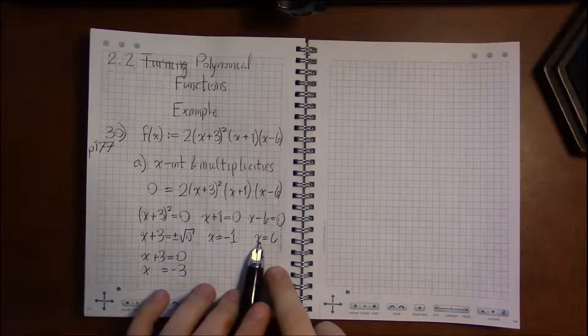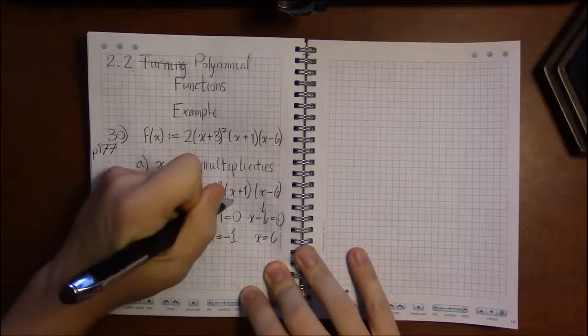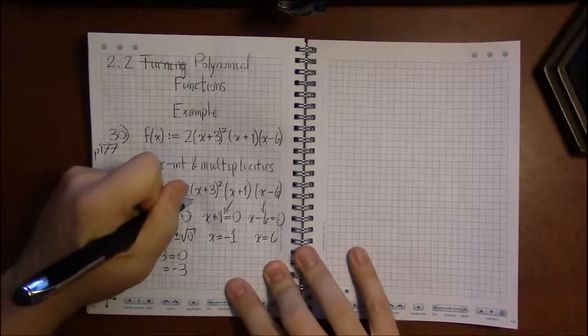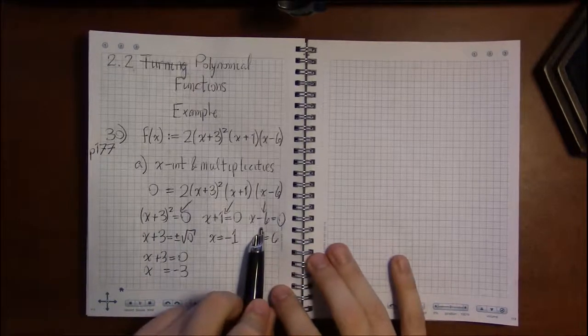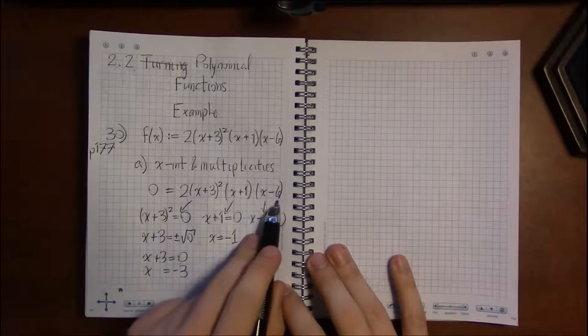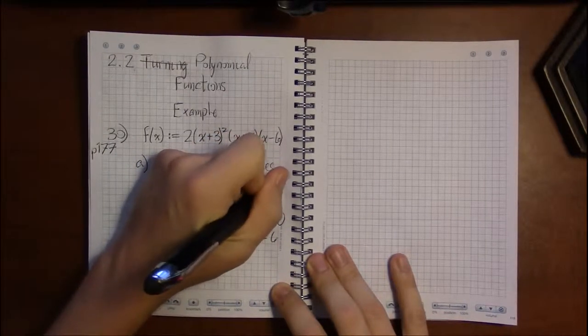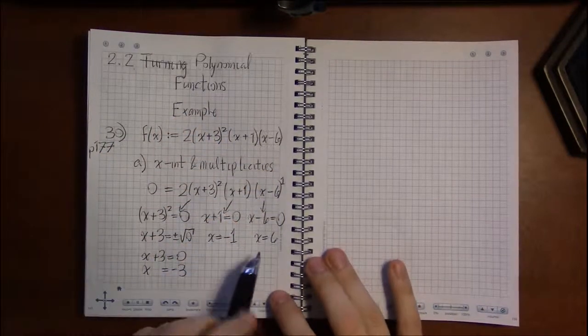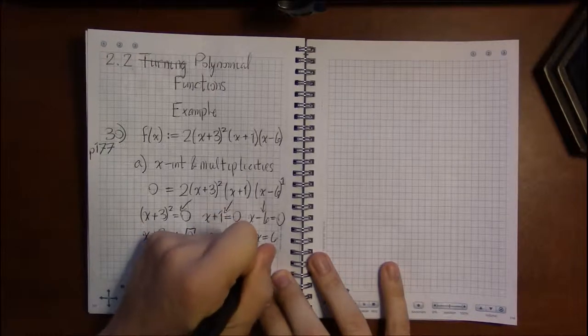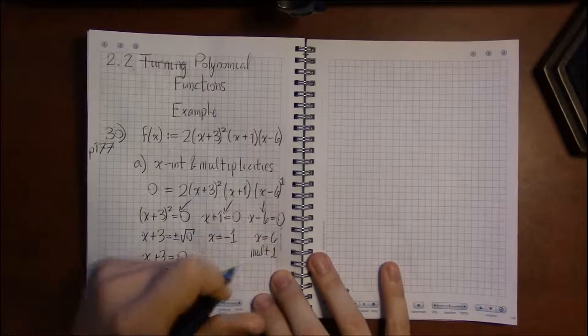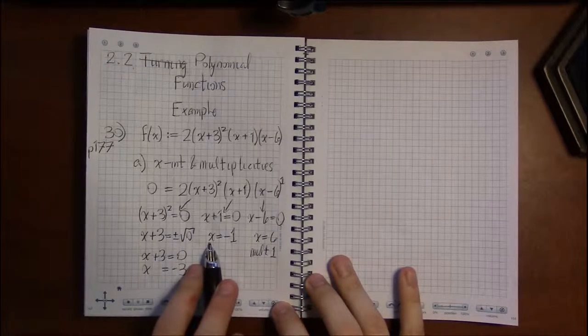Now for the multiplicities. Go back up and look at what spawned each equation, and then look at the exponent on that factor. So from 6, that came from this step, and x minus 6 equals 0 came from here. I don't see an exponent, so that means the exponent must be 1, and we're just being lazy and not writing 1 down. So this has a multiplicity of 1. x equals 6 has a multiplicity of 1.